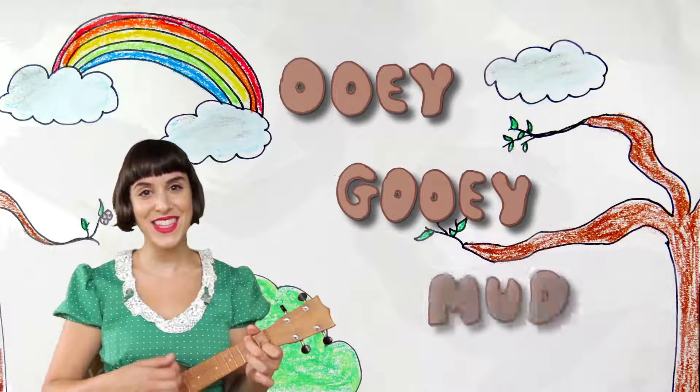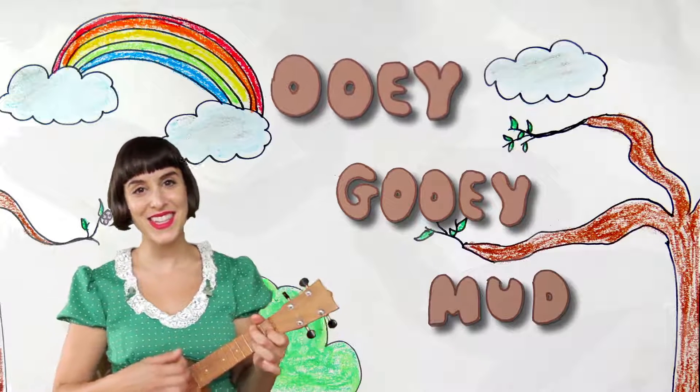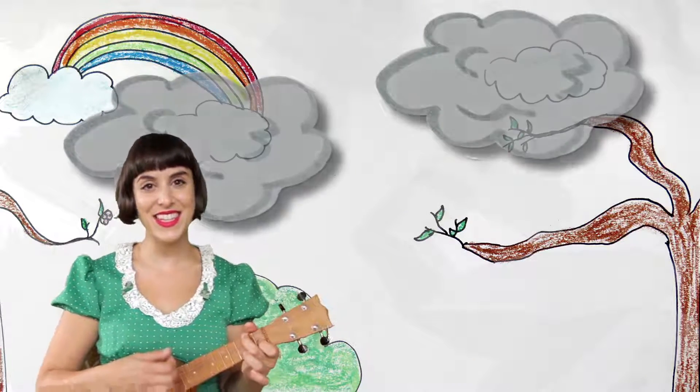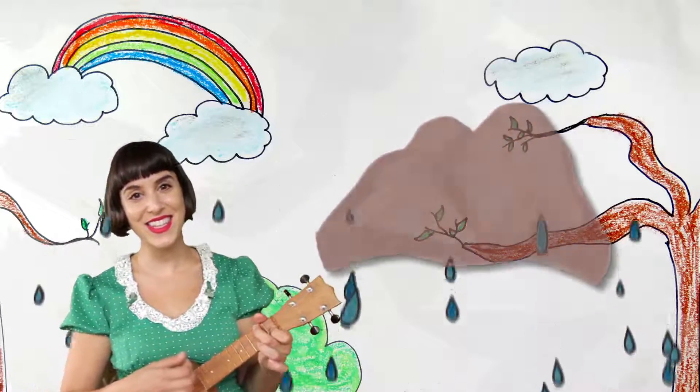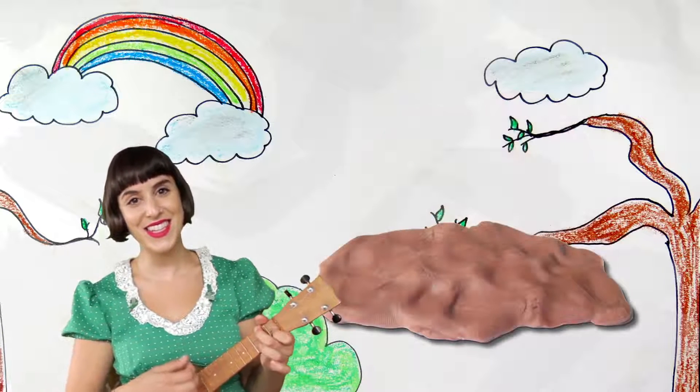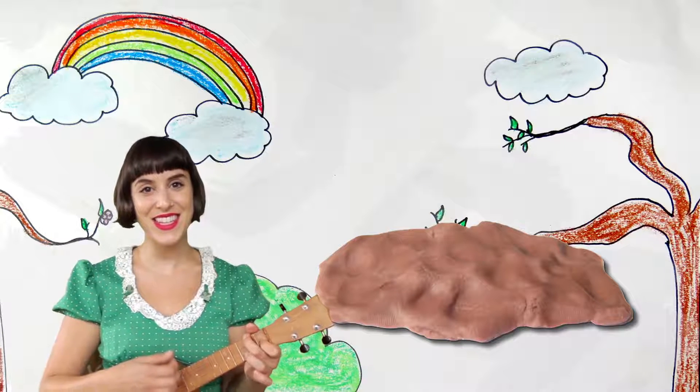Ooey gooey mud. Ooey gooey mud. Ooey gooey mud. Even though it's gray out, it's not hot mud. Because the rain turned the dirt into ooey gooey mud. Because the rain turned the dirt into ooey gooey mud.